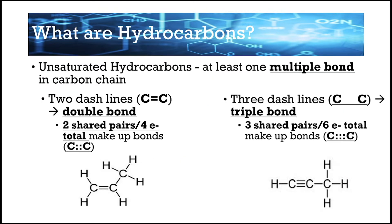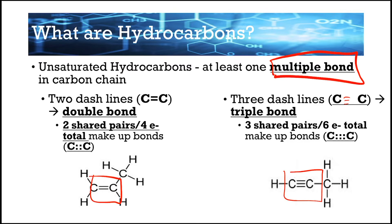Unsaturated hydrocarbons have at least one multiple bond — either a double bond or a triple bond. A double bond has two lines: two pairs of electrons, four total electrons. A triple bond has three lines: three pairs and six electrons. Here's what they look like in a compound.